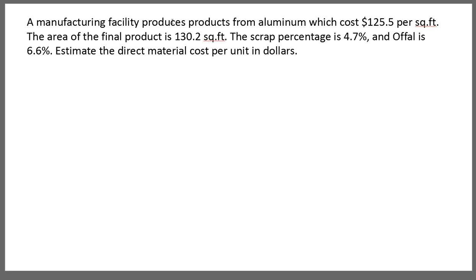A manufacturing facility produces products from aluminum which cost $125.5 per square foot. The area of the final product is 130.2 square feet. The scrap percentage is 4.7 percent. Offal is 6.6 percent. Estimate the direct material cost per unit in dollars.